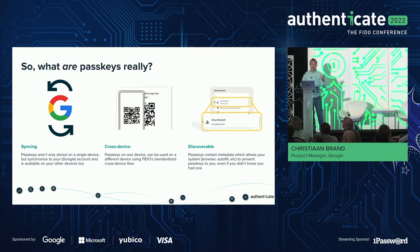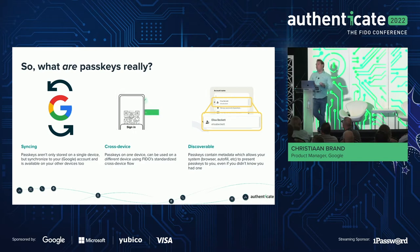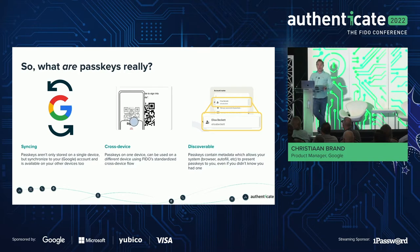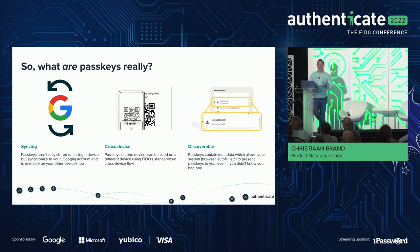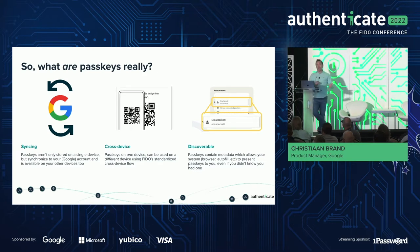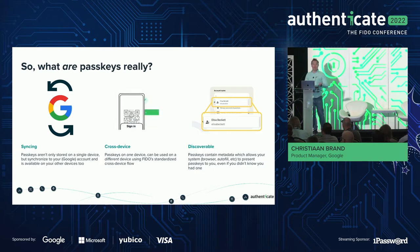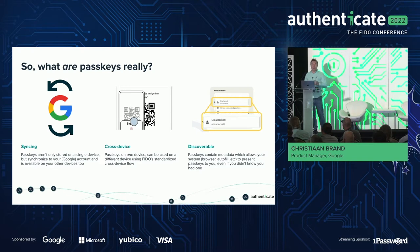Essentially there are three things. The first one being passkeys sync — or as called out in the spec, they are backed up. That means they're resilient. If you create a passkey on one device and the user loses access to that device, or they might own more than one device, passkeys synchronize. If I create one here, the passkey is available on another device. Typically if I lose access to a phone — it breaks, stuff happens, or I upgrade my device — I don't have to start from scratch.